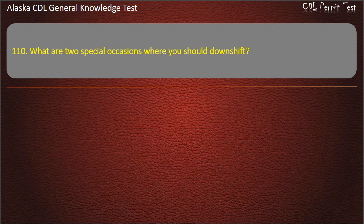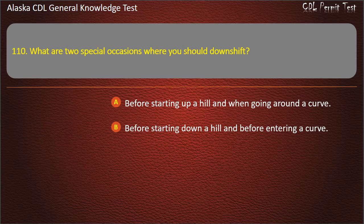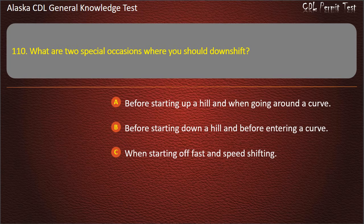Question 110. What are two special occasions where you should downshift? Before starting up a hill and when going around a curve, or before starting down a hill and before entering a curve, or when starting off fast and speed shifting. Answer: Before starting down a hill and before entering a curve.